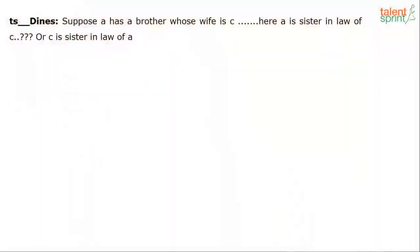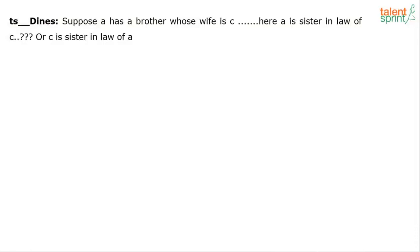There are two types of brothers-in-law: one is my sister's husband, and the other is my wife's brother — both are my brother-in-law. The same is the case with sister-in-law. Now, in this particular question, it says A has a brother whose wife is C.